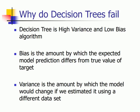Variance is the amount by which your model would change if you estimated the same model using a different dataset. So if we split the data in two halves at random and fit a decision tree, the results would be really different for both the decision trees, and that is why it has a very high variance and a low bias.